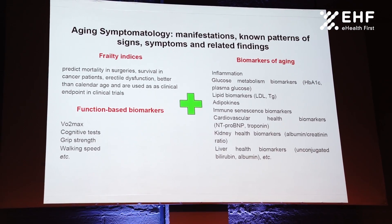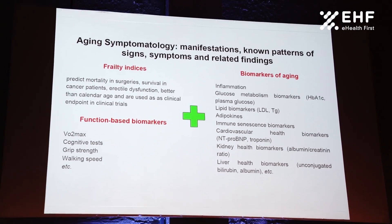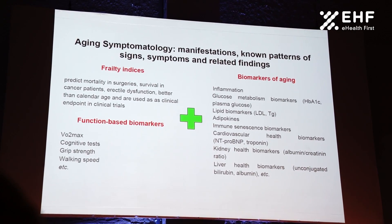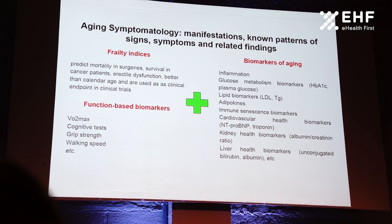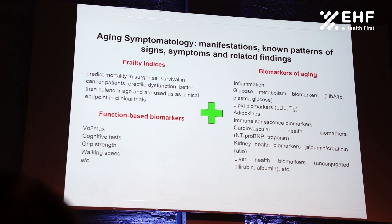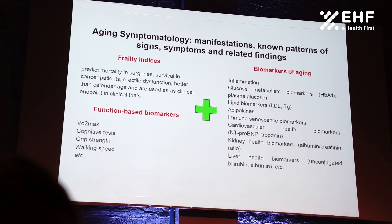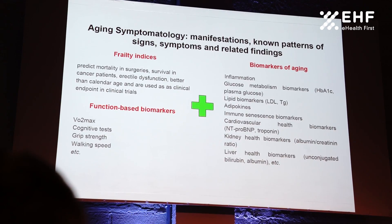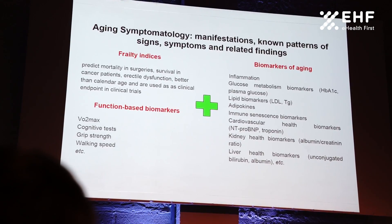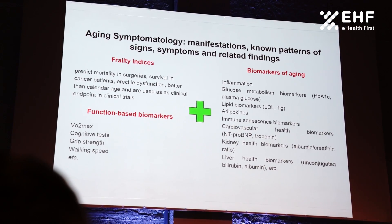If we can establish all those components, we can officially call aging a disease. Regarding symptomatology, we now have at least three groups of biomarkers and some complexes of biomarkers. First, frailty indexes, which are already developed well enough to serve as endpoints in FDA-registered clinical trials. There are also functional biomarkers, and so-called blood-based or urine-based biomarkers. Work by researchers here is showing that these biomarkers, especially in combination, can have quite nice predictive power. So we do have signs and symptoms of aging.